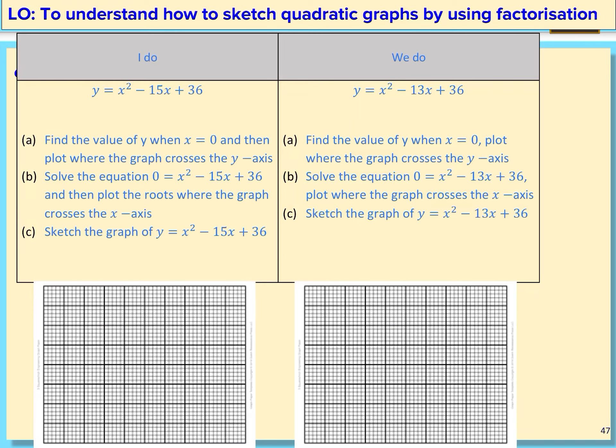So when we are sketching quadratic graphs by using factorization, the first thing is to look at the equation and find where the y-intercept is. The y-intercept is the constant in the equation, so 36 for this one is our y-intercept. This is going to enable us to have a more accurate sketch of the graph.